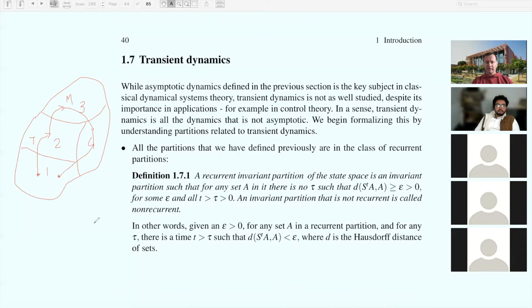This kind of partition is called a periodic partition with period four, because in the fourth step we came back to where we started from. Now we're going to generalize this and define the notion of recurrent invariant partitions of the state space.